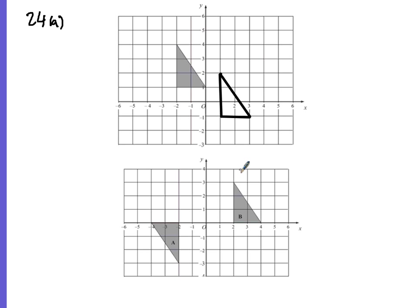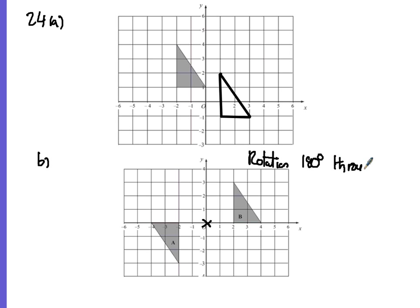Then fully describe the single transformation that maps A onto B. Looking at A and B, we have a rotation of 180 degrees through the point (0, 0). You can use tracing paper to verify that. This answer is worth 3 marks.